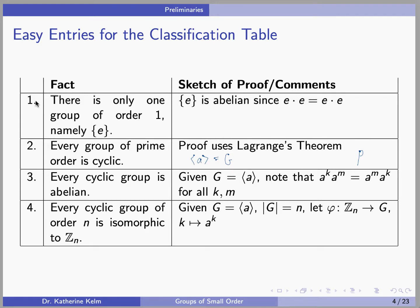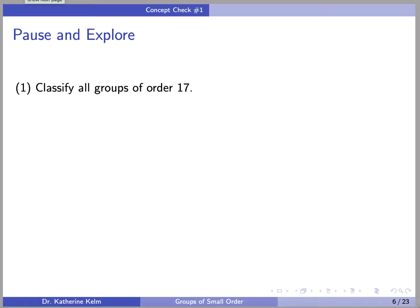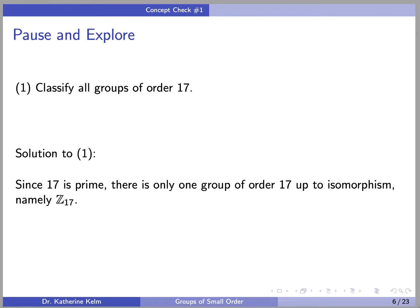This video is intended for those for whom these facts are review. If they're not review, you should pause the video and make sure they feel like review before going on. Here's our first concept check: classify all groups of order 17. Since 17 is prime, there is only one group of order 17 up to isomorphism, namely Z17.